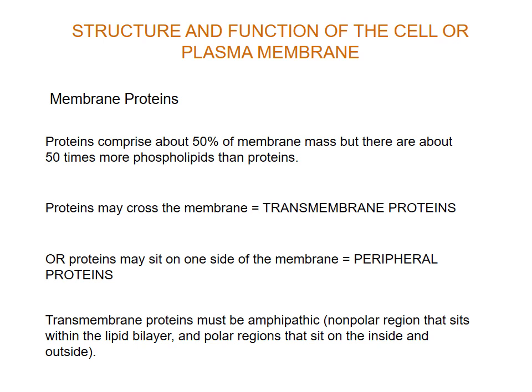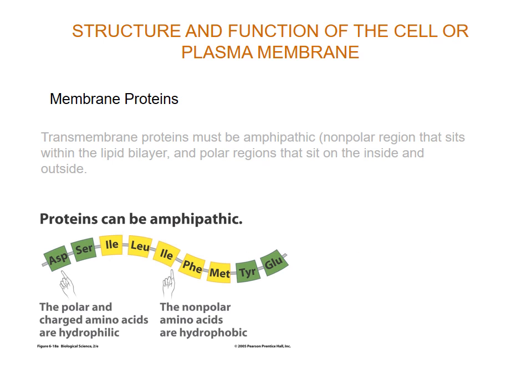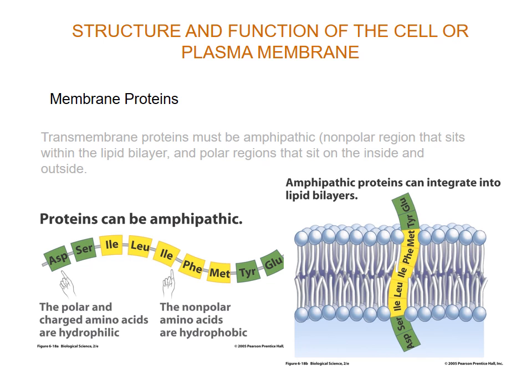Transmembrane proteins need to be like the phospholipids — amphipathic — where they have a nonpolar region that sits within the bilayer and a polar region that sits on either side. They have polar charged amino acids on the outside or edges, and nonpolar hydrophobic amino acids on the inside. In the cell membrane, the hydrophobic center is sandwiched between the two phospholipid heads, with hydrophilic polar ends sticking out on either side.